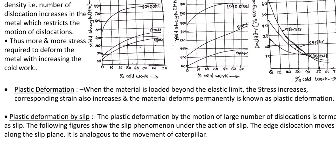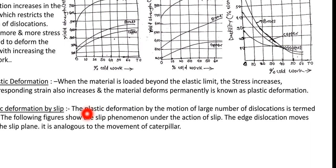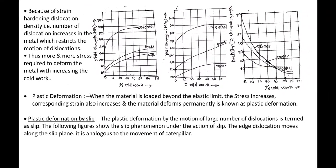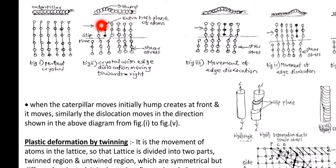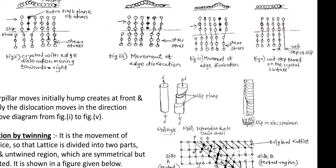Plastic deformation by slip: the plastic deformation by motion of a large number of dislocations is termed as slip. Using a caterpillar analogy — this is the perfect crystal with the caterpillar in straight position. As we plastically deform the metal, an edge dislocation is produced. This hump position coincides with the edge dislocation, and the dislocation moves continuously in the forward direction, just as the hump moves forward. This is the slip phenomenon and this is the slip plane.